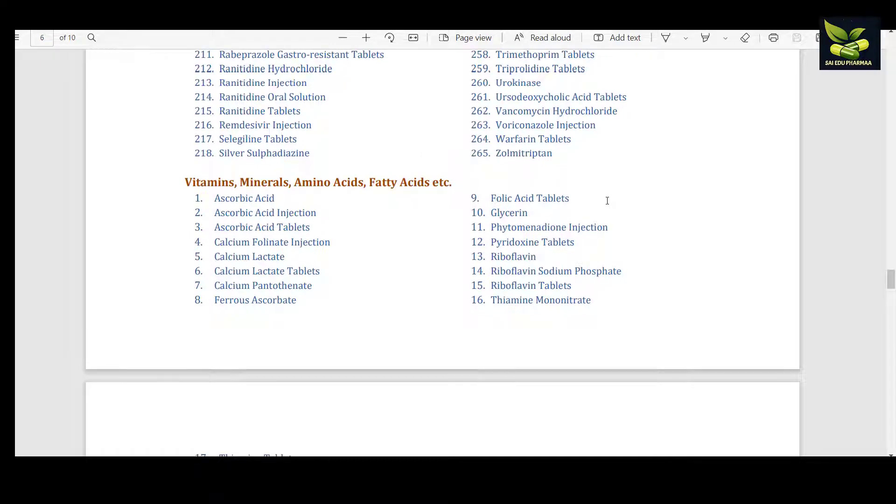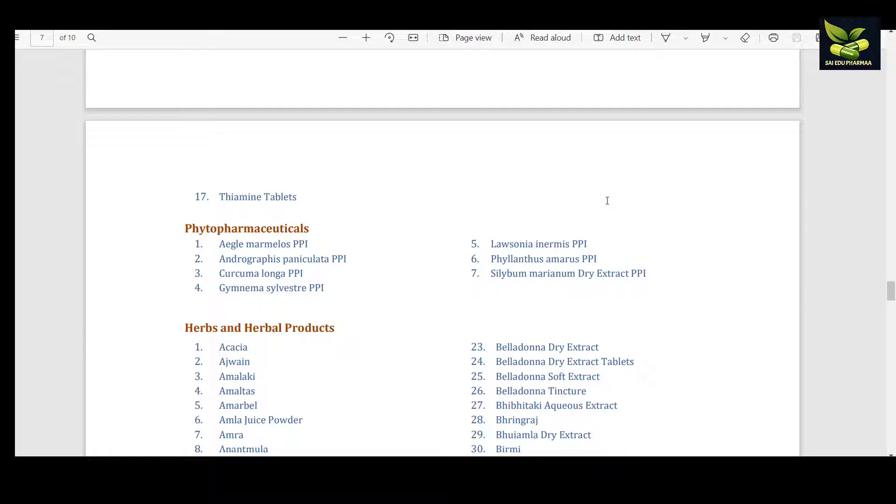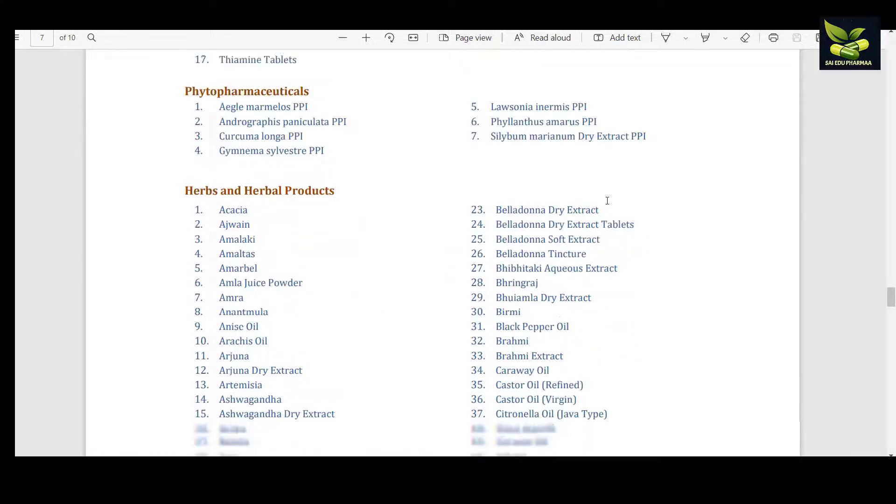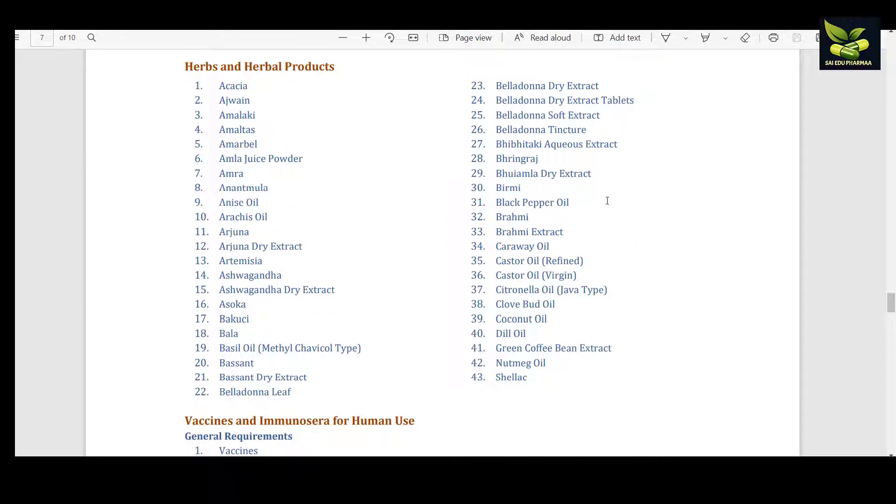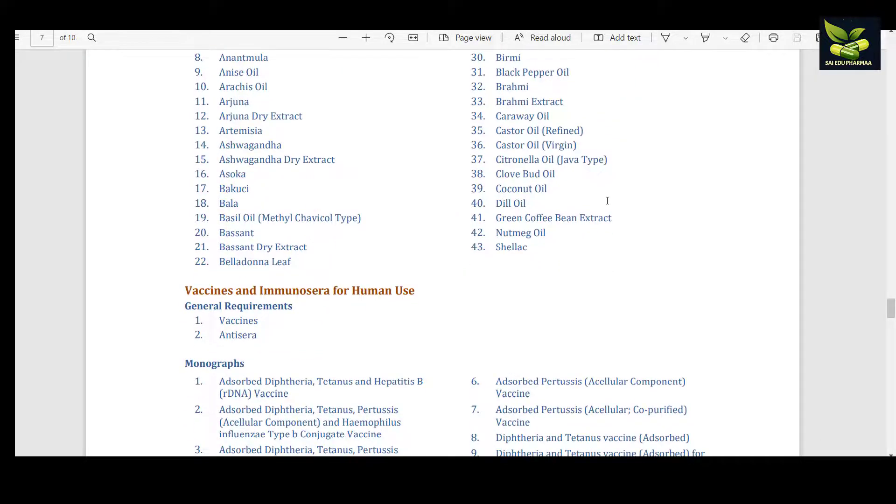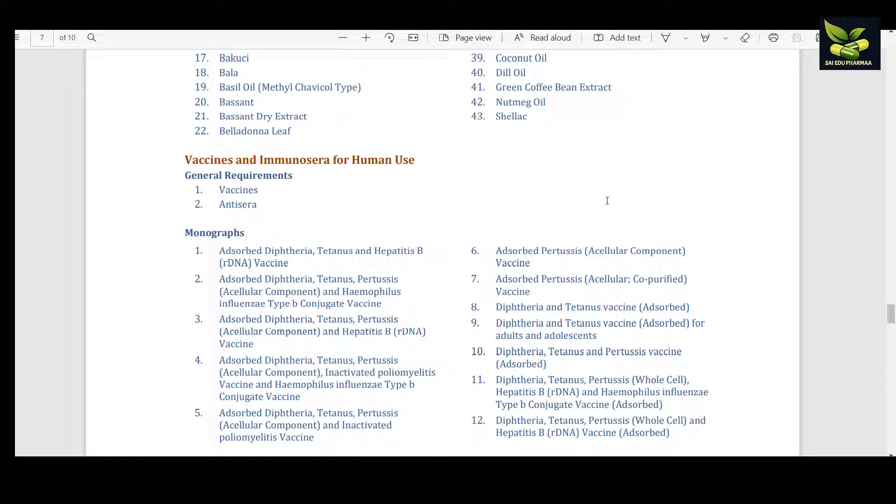These are vitamins, minerals, amino acids, and fatty acids. Then these are phytopharmaceuticals, herbs and herbal products, and vaccines and immunosera for human use.